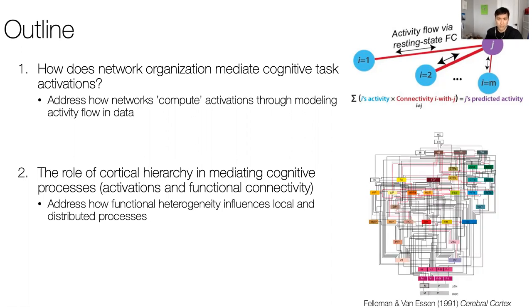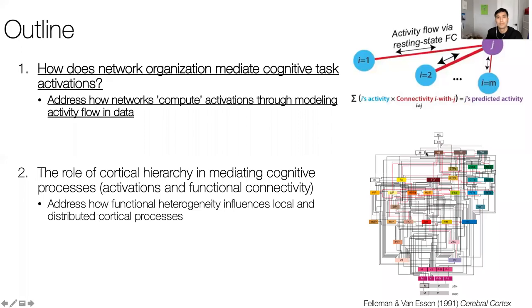A canonical example of cortical hierarchy is from the Felleman and Van Essen paper in 1991, in which they revealed a structured hierarchy as determined by anatomical wiring in the macaque cortex. At the bottom you have more visual or input areas, and at the top you have higher-order association cortex.